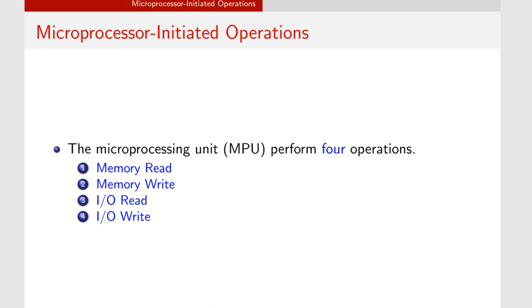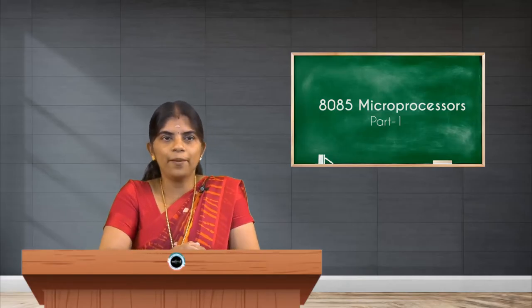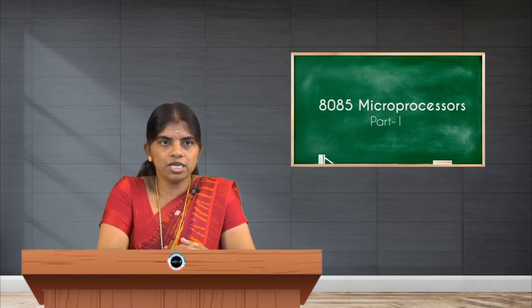For microprocessor-initiated operations — memory read, memory write, I/O read, and I/O write — to communicate the microprocessor with memory or any I/O device (which we can call a peripheral), the microprocessor needs to perform three steps: first, identify the peripheral or memory location; then transfer the data and instructions stored in memory; and finally, provide timing and control signals, i.e., synchronization signals. To understand these three steps, we need to know the bus structure of the microprocessor.